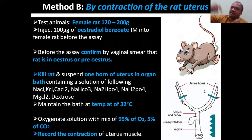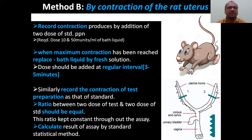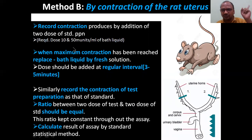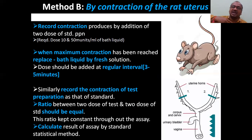Record the contraction of the uterine muscle on the kymograph — when injection is given in the organ bath, the tissue contracts, the lever moves, and you get a curve on the kymograph. Record contractions produced by two doses of the standard preparation, for example 10 and 50 milli-units per ml. Do the same for the test preparation — two doses — giving four curves total. Match when maximum contraction is reached, replace the liquid with fresh solution, and calculate results using standard statistical methods such as Student's t-test.